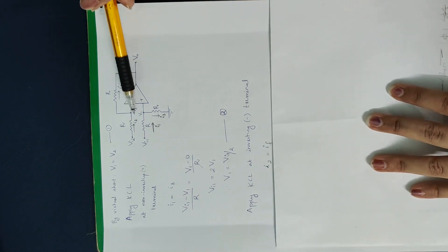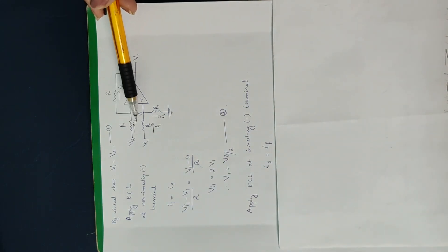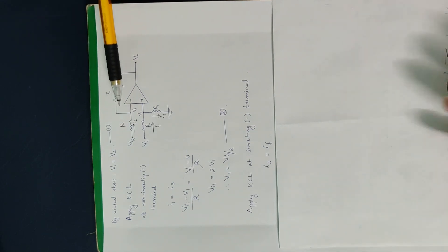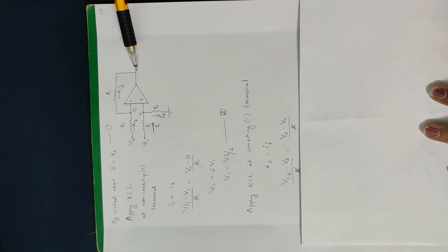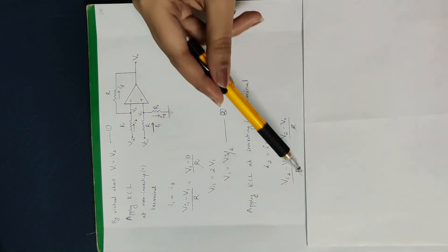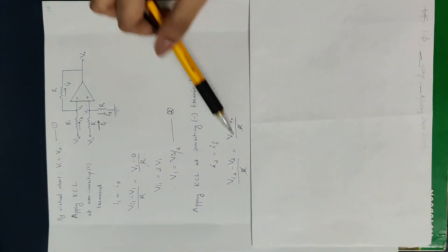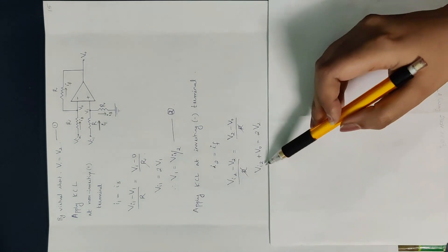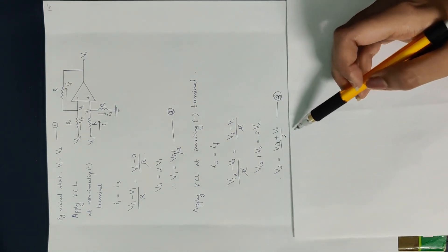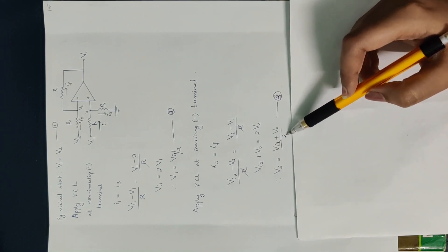I2 is equal to IF. The equation is: (Vi2 minus V+) divided by R equals (V+ minus Vo) divided by R. The R values cancel. Rearranging gives Vi2 minus V+ equals V+ minus Vo, so Vo equals 2V+ minus Vi2. Therefore Vi2 plus Vo divided by 2 gives V+.